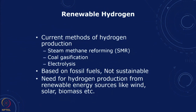We talked about hydrogen and the only way we can think in terms of making hydrogen viable is if we can make it from renewable sources. Current methods of hydrogen production: typically most of it, 90 percent of hydrogen production comes from natural gas, from steam methane reforming. One can also have coal gasification and electrolysis. Mostly it is based on fossil fuels which is not sustainable from the overall viewpoint.